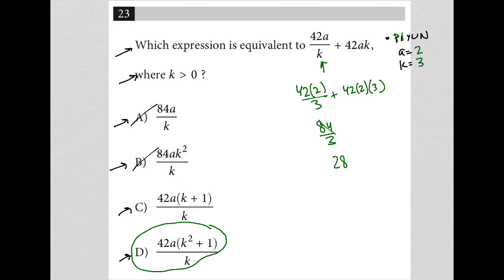So this goes to 28. And then 42 times 2 is 84, and then times 3, I get to my calculator. 84 times 3 is 252. This becomes 28 plus 252, and that is 280.